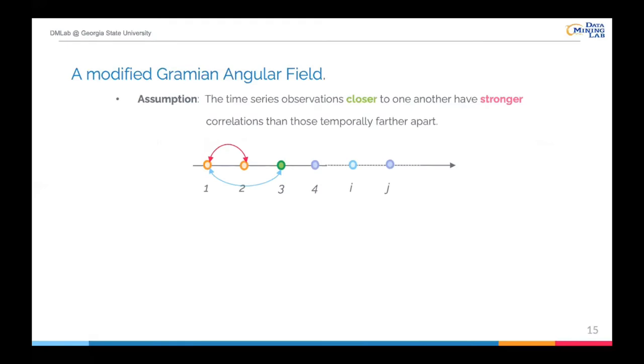Next, I'm going to introduce the modified Gramian Angular Field proposed in this paper. The modified GAF is based on an assumption, that is, the time series observations closer to one another have stronger correlations than those temporally farther apart. For example, given a time series, the first time point and the second time point have a stronger correlation, compared to the first time point with the third time point, or other subsequent time points. With this idea, we define a weighting matrix capital W. I and j are the index of time steps. I minus j will be the distance between two points. The final weight will be 1 minus the absolute value of distance over the total length of a time series. In this way, the closer time points have larger weights, while the further time points have lower weights. Meanwhile, the radial information obtained from the original time series is encoded.